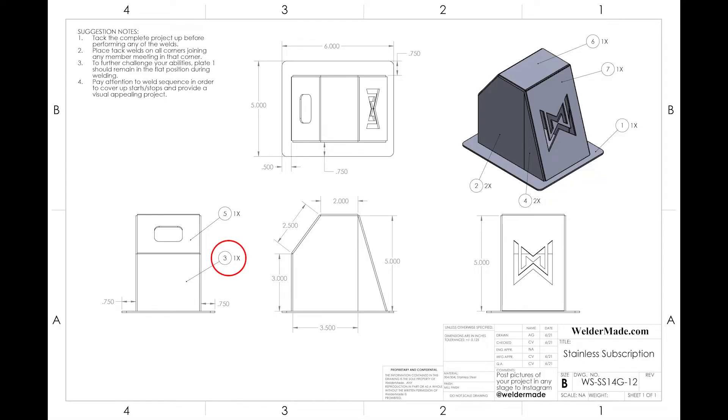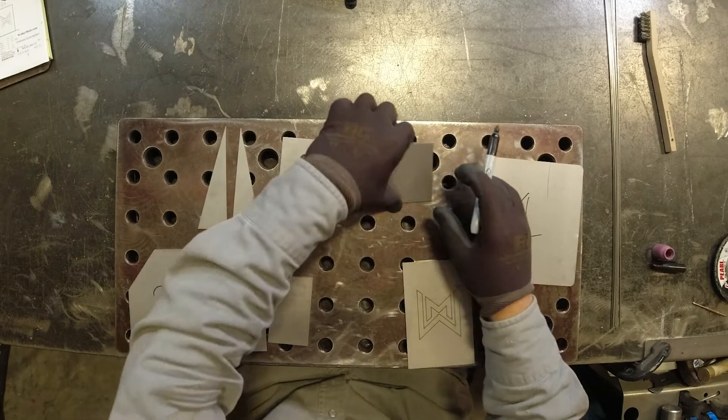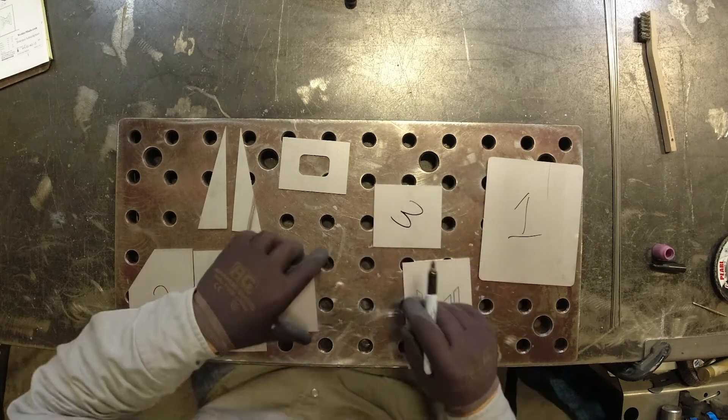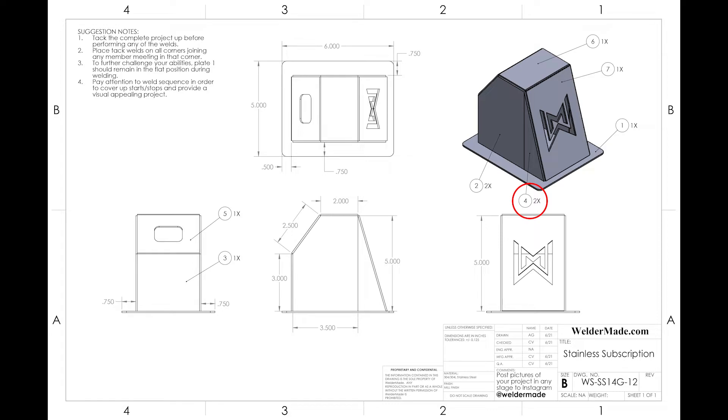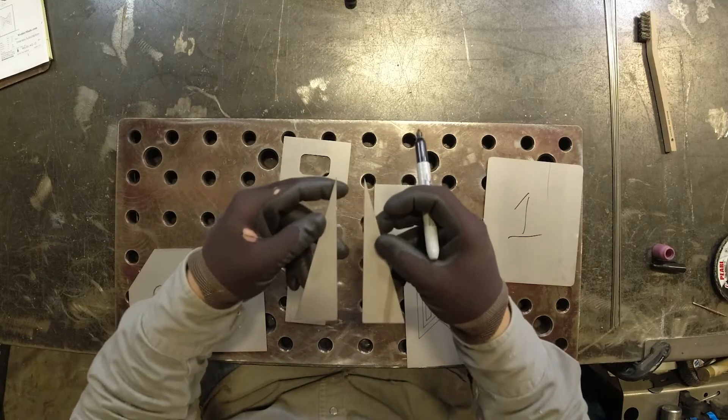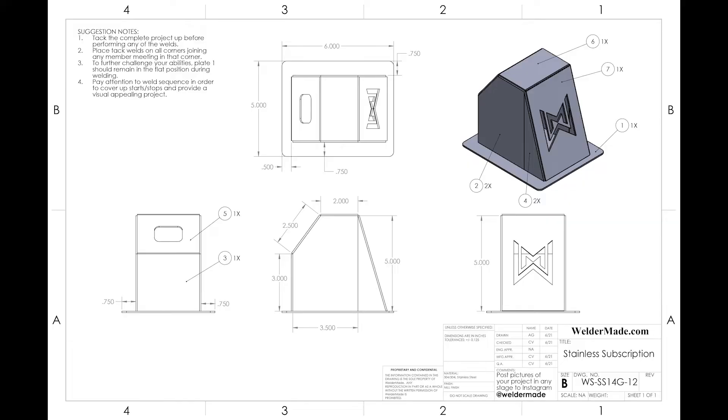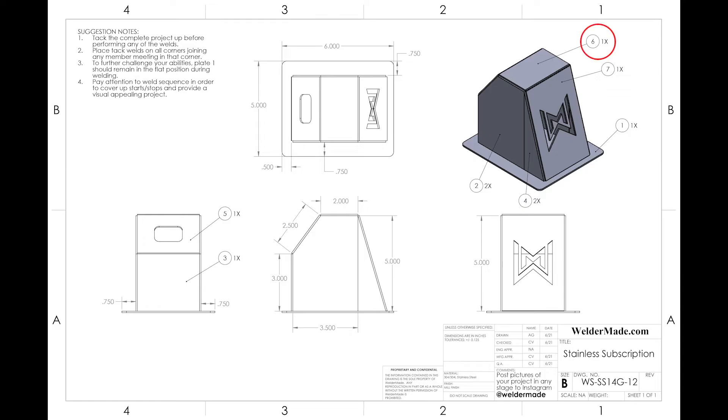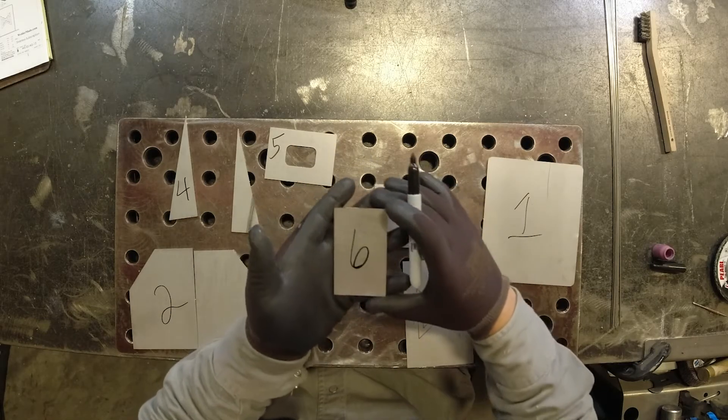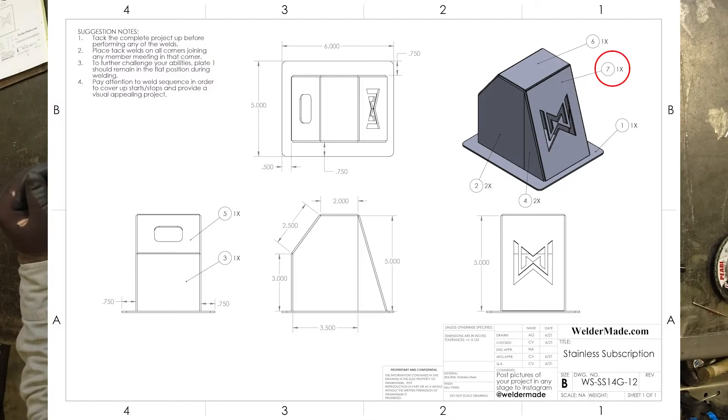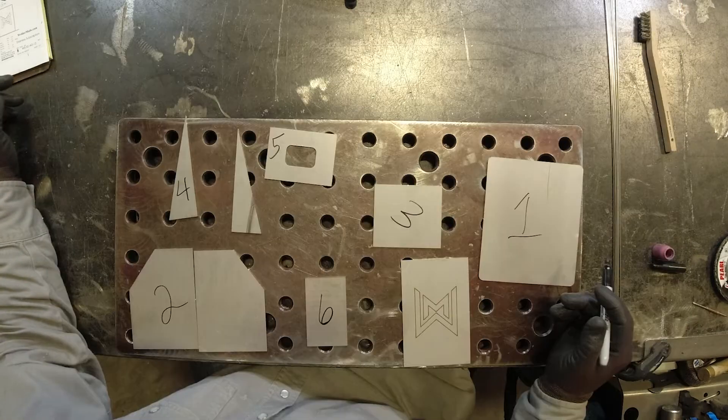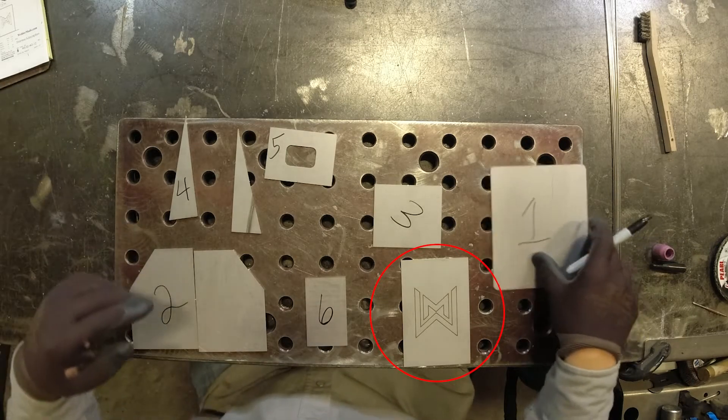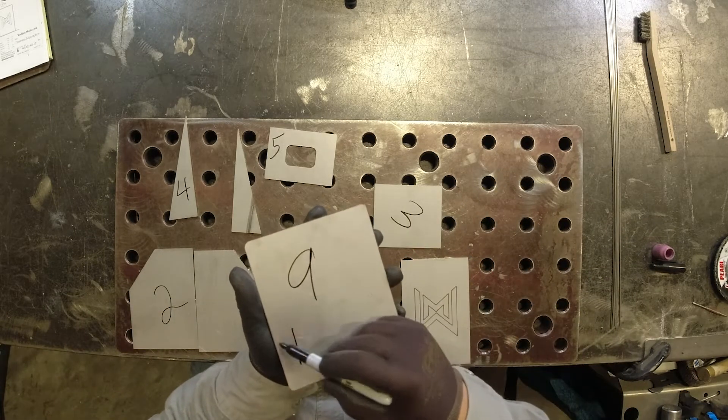Part number three is a bigger rectangle. It's three inches tall. That's part number three. Part number four is that really sharp triangle looking piece. There's two of them. Part number five is the piece with the purge hole on the back. Part number six is a rectangle on the top. Two inches wide. That's part number six. Part number seven is part with the Weldermade logo.